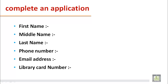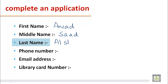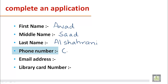The first important part is your first name. Suppose your first name is Awad — we will write Awad. Your middle name, suppose it is Saad — we will write Saad. Your last name, suppose it is Al-Shahrani — we will write Al-Shahrani. Next, your phone number — for example, 0596...